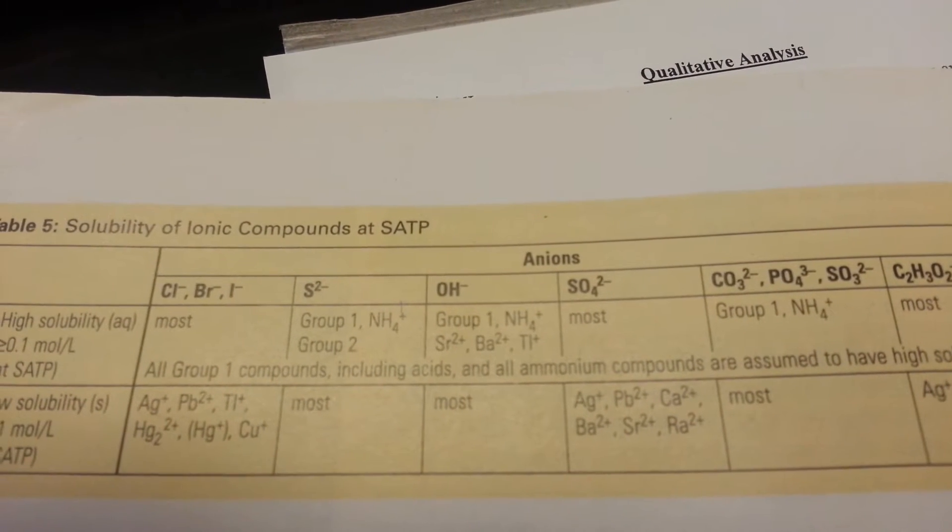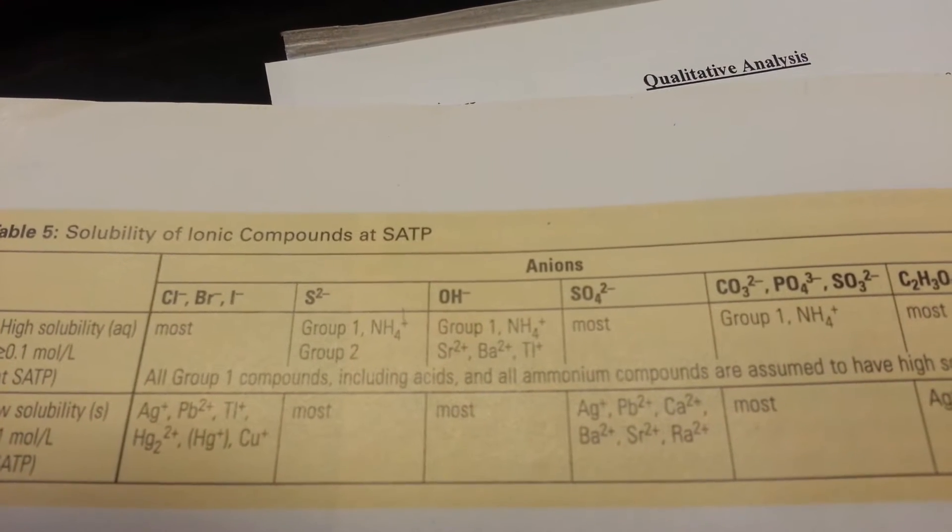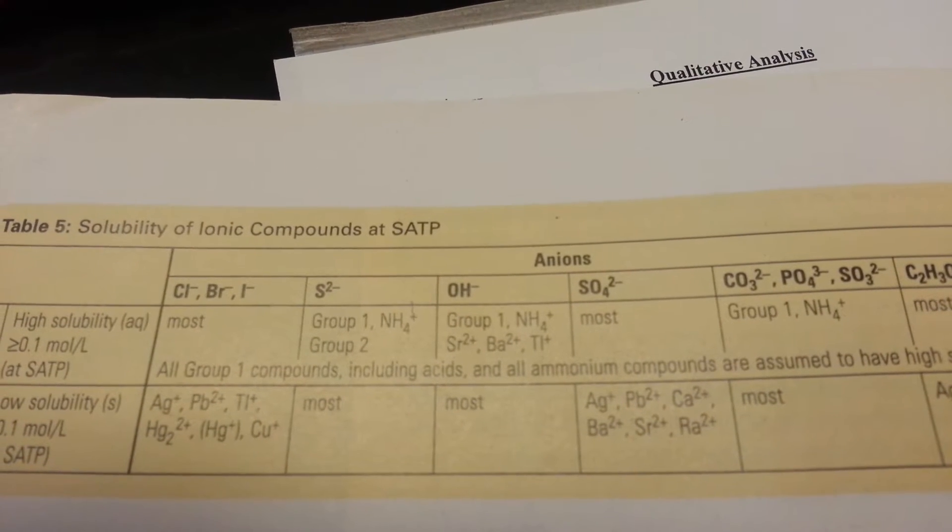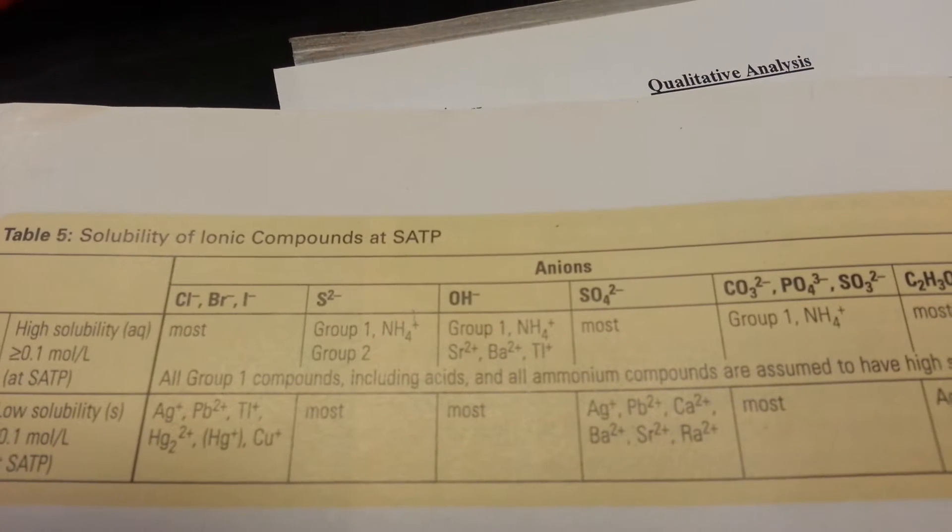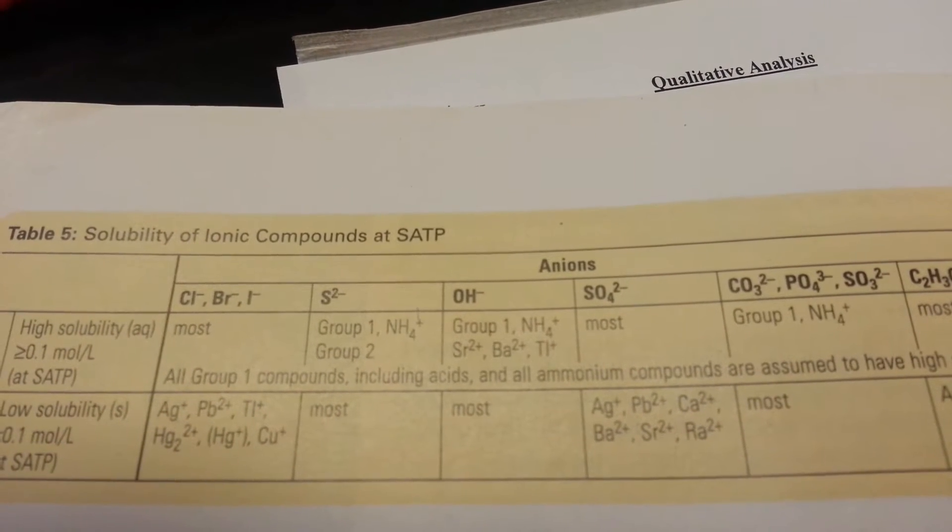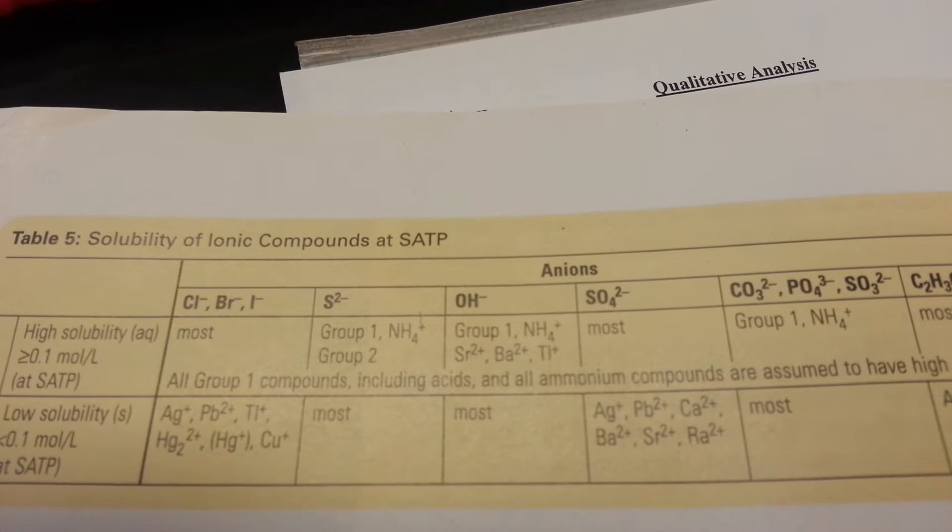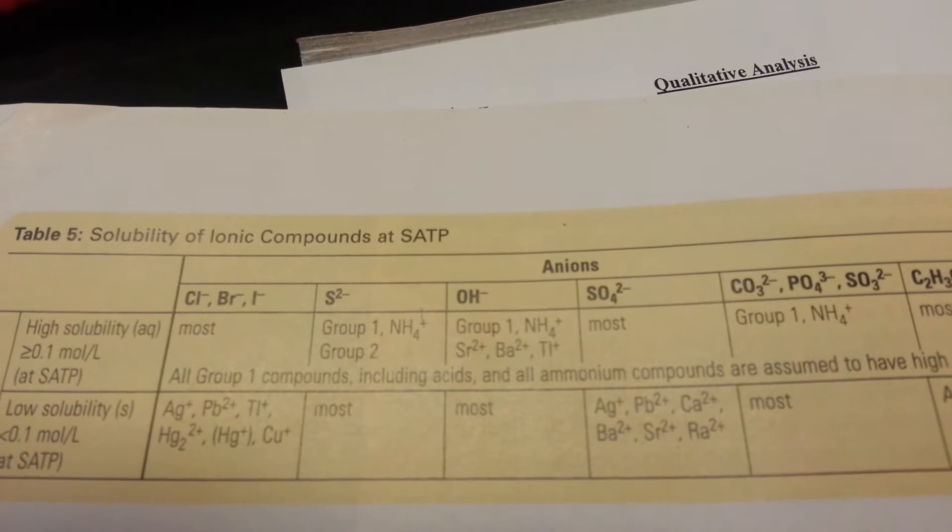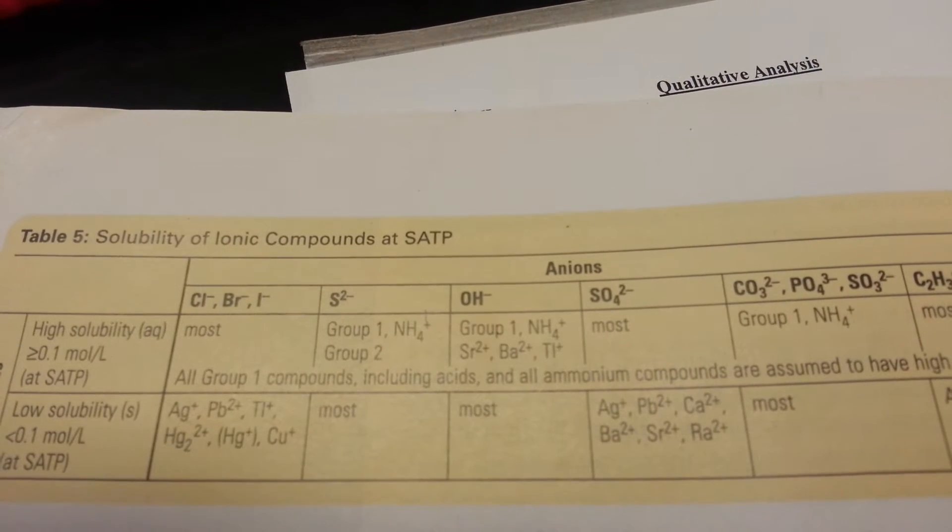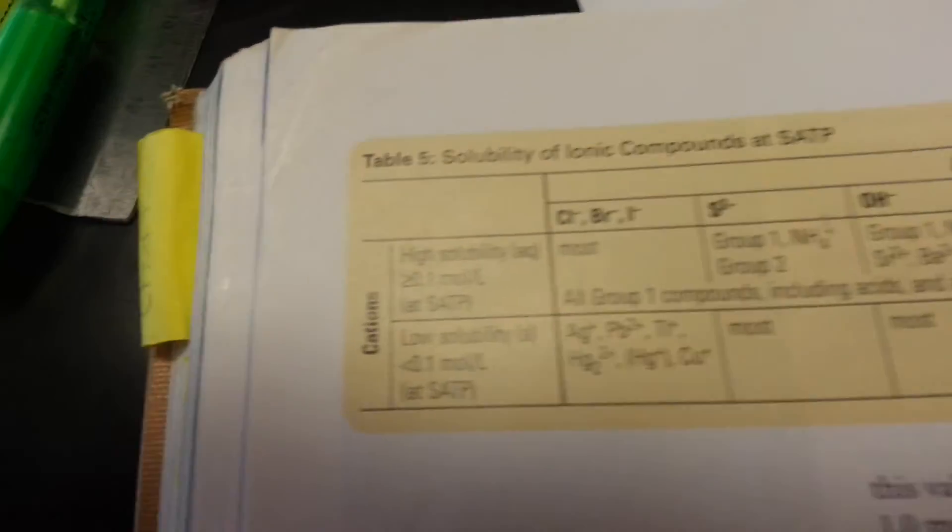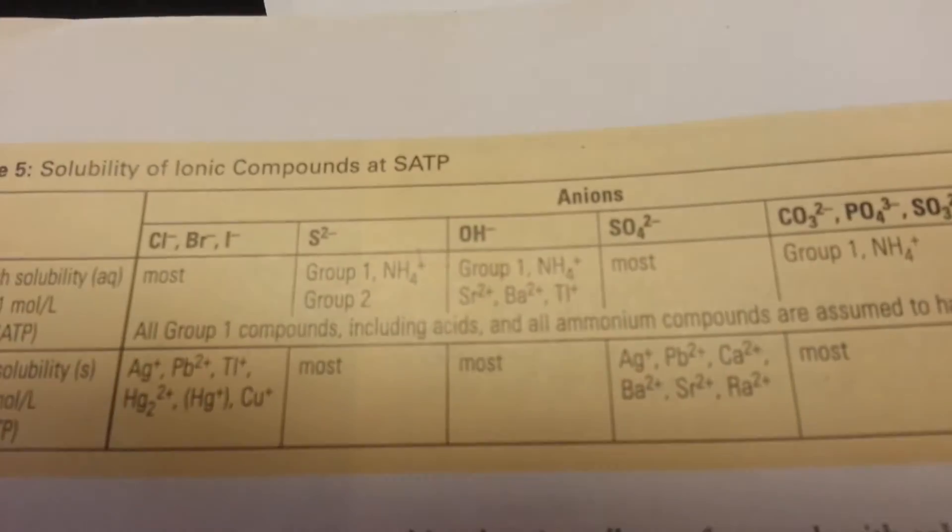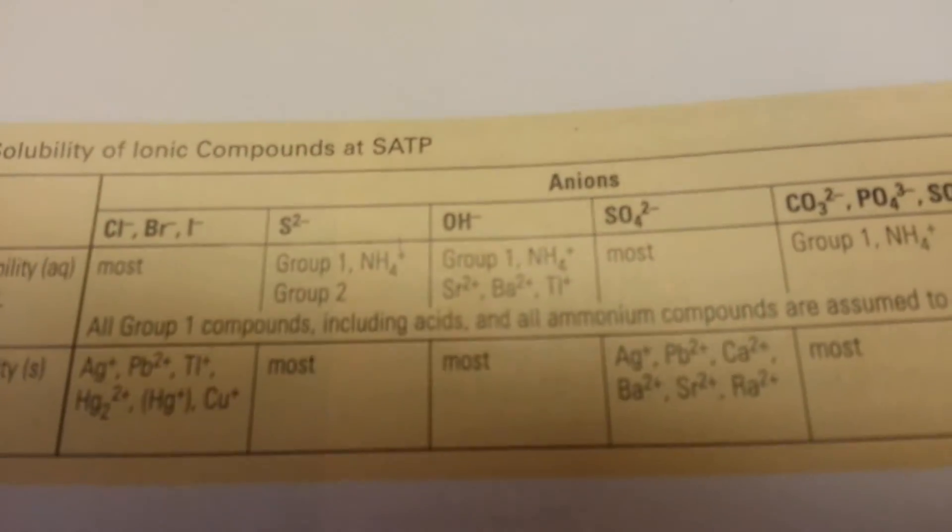Moving again, we're looking for calcium. Look in the exceptions group, group one, ammonium, strontium, barium, and tellurium. None of these are calcium. So, calcium is going to fit into the category of most when making a compound with hydroxides. It is going to have low solubility. Thus, we will write down hydroxide.